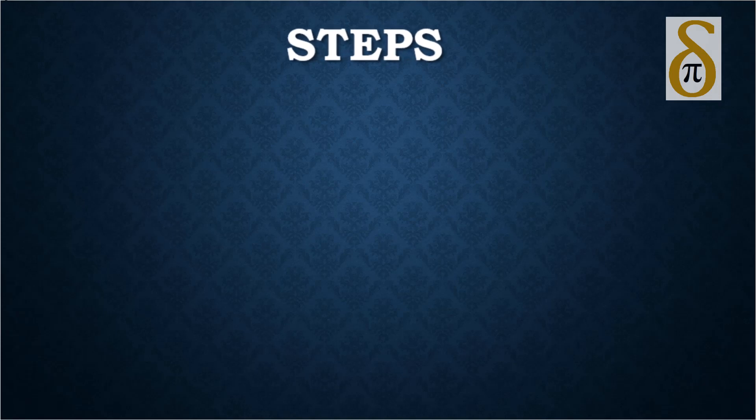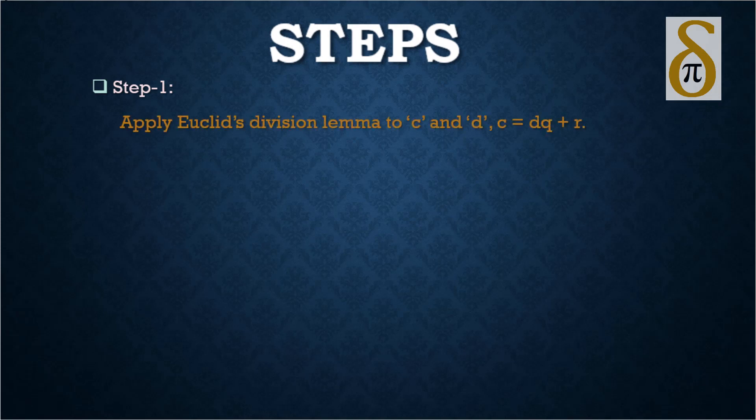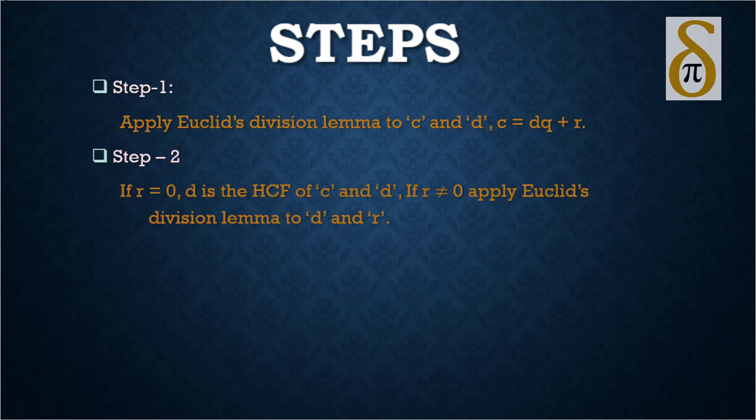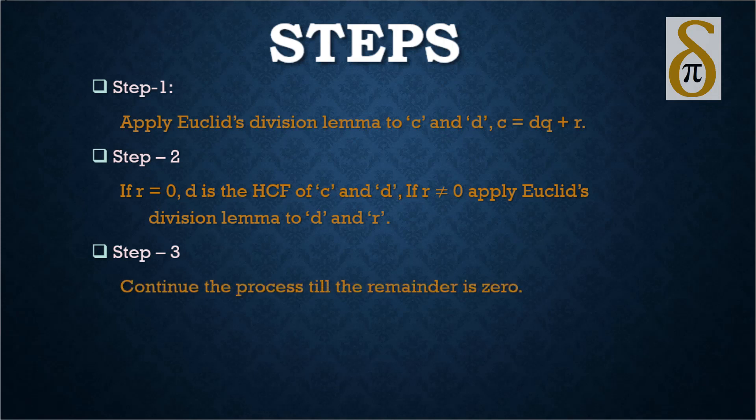Remember these steps. First, apply Euclid's division lemma for two numbers c and d so that c equals dq plus r. Step 2, if the remainder is 0 then the divisor d is the HCF of both numbers c and d. If the remainder is not equal to 0, continue the process with Euclid's division lemma by taking d and r as the numbers and continue this process till you get the remainder 0.